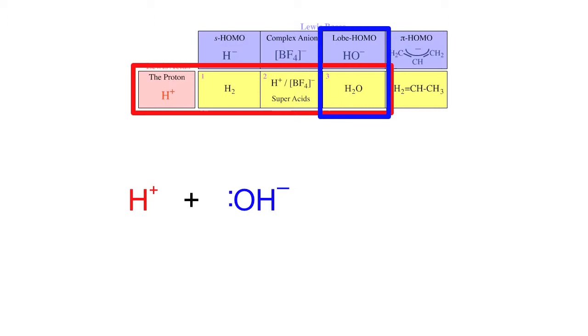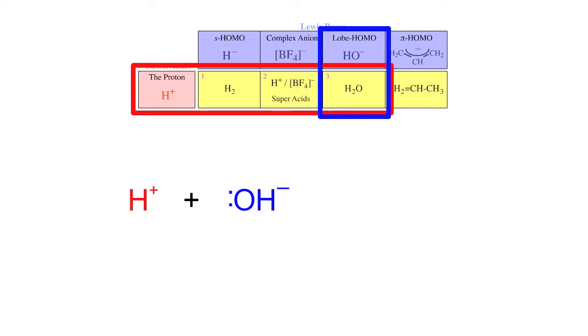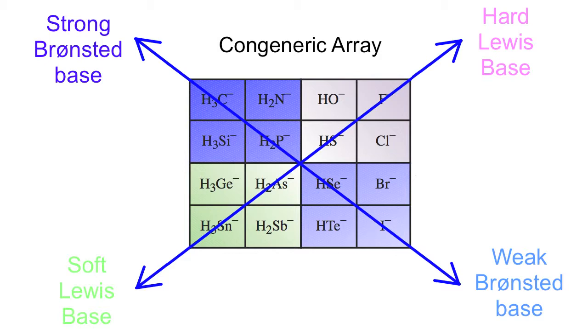Next we come to the very well-known interaction of the proton H+ with hydroxide ion OH- which gives rise to water. This reaction actually represents a very large class of Bronsted acids. The hydroxide ion is a surrogate for a congeneric array of Lewis bases ranging from the methyl anion to the iodide ion and the fluoride ion to the tin anion.